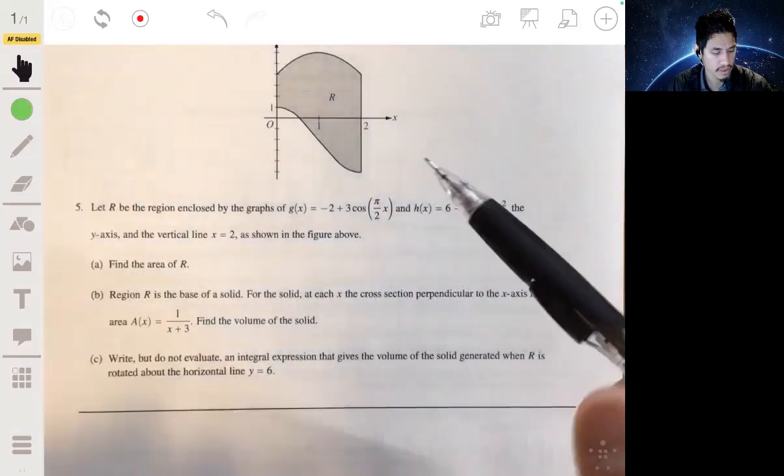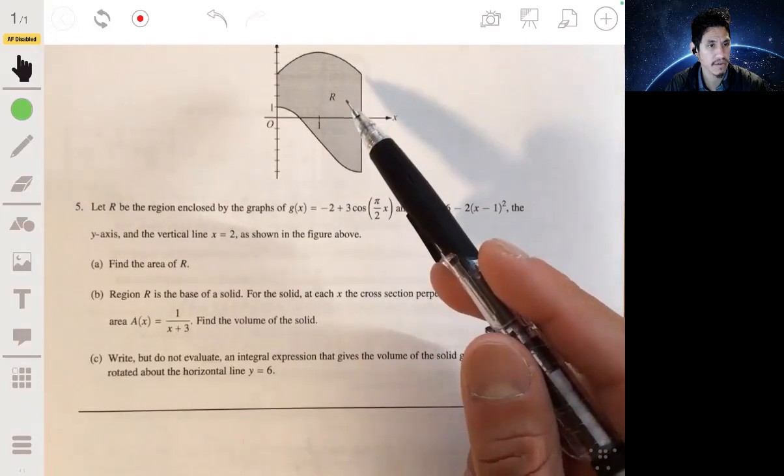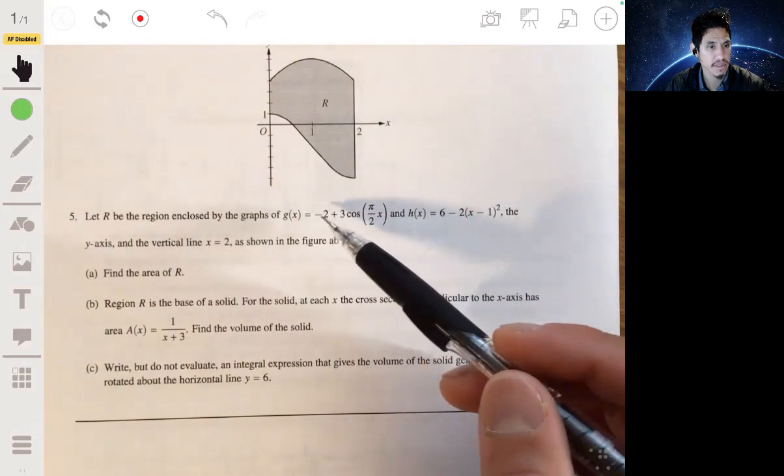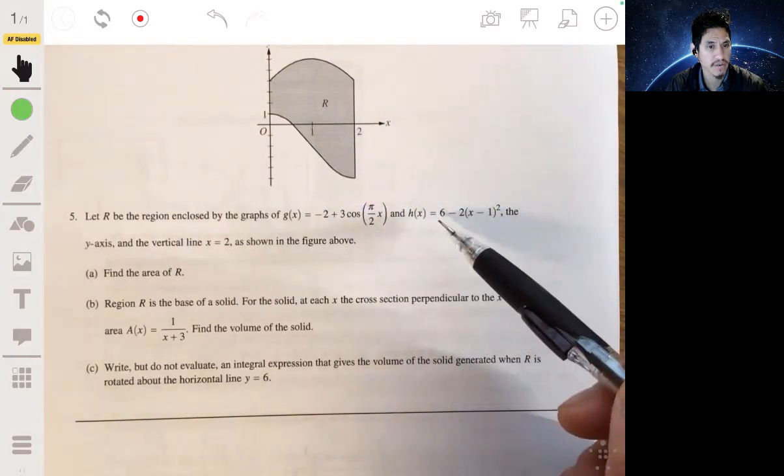Alright, five. We got the region enclosed by these graphs of g(x) and h(x).